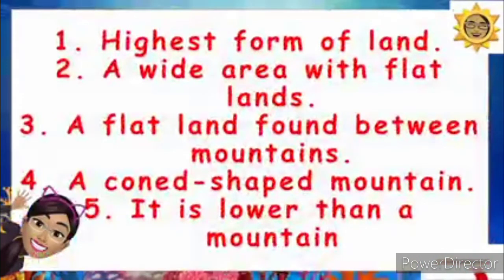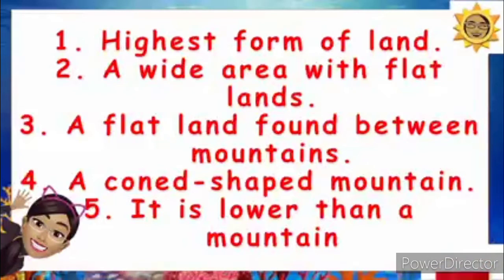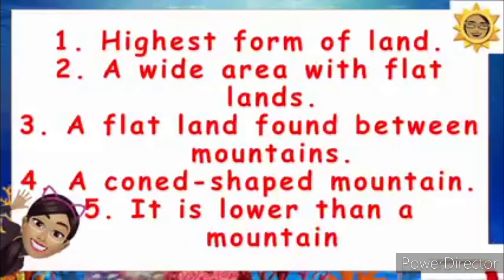Number one: this is the highest form of land. Very good — a mountain. A wide area with flat lands. Yes, plains. A flat land found between mountains. Yes, correct — valley. A cone-shaped mountain with a crater on top. Good job — volcano. It is lower than a mountain. Correct, it's a hill.